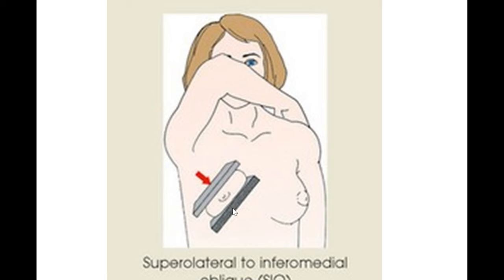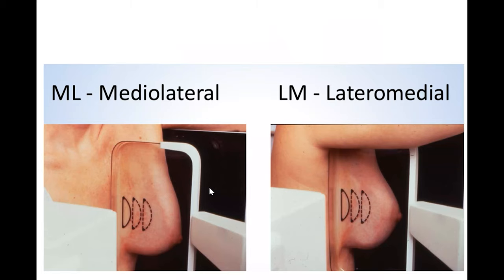In the suprolateral to inferomedial oblique view, the image detector is on the inferomedial side of the breast and the x-ray tube is on the superolateral side of the breast. There are also true lateral medial and medial lateral views, where the image receptor is placed on the lateral side of the breast.